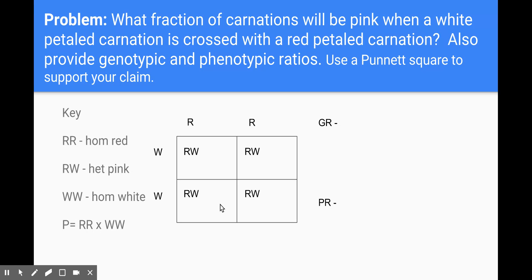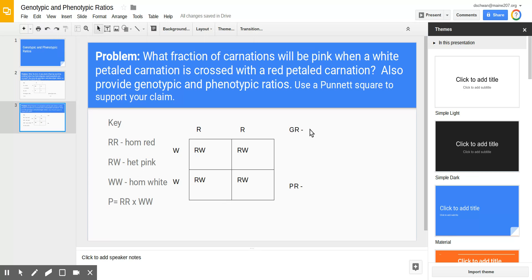All right so the genotypic ratio for this problem. There are no big R big R offspring and I note that with a zero. I note that with a zero and there are four offspring that are heterozygous RW and there are no offspring that have the WW genotype. So the genotypic ratio is zero to four to zero.